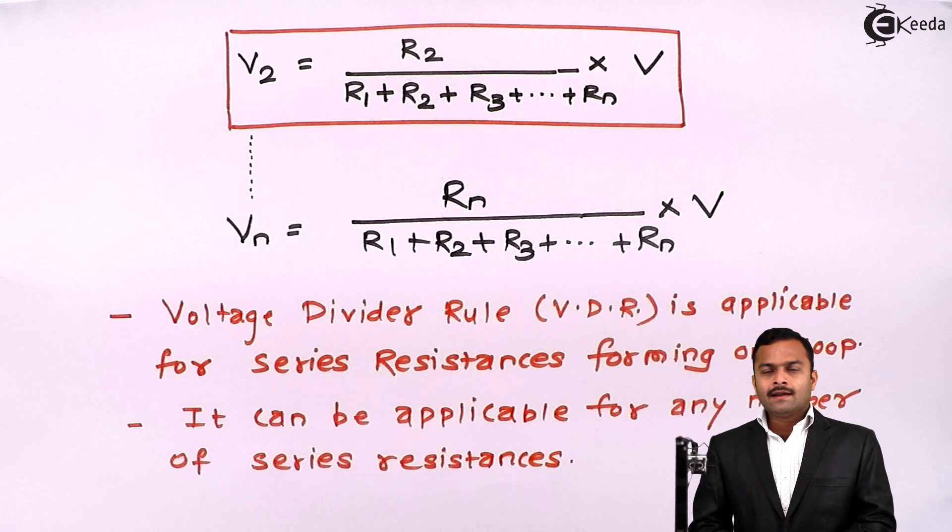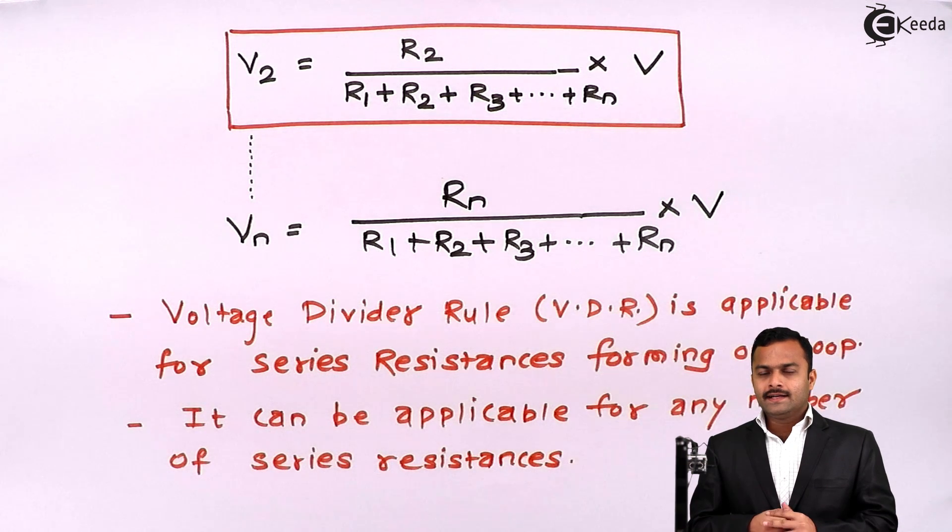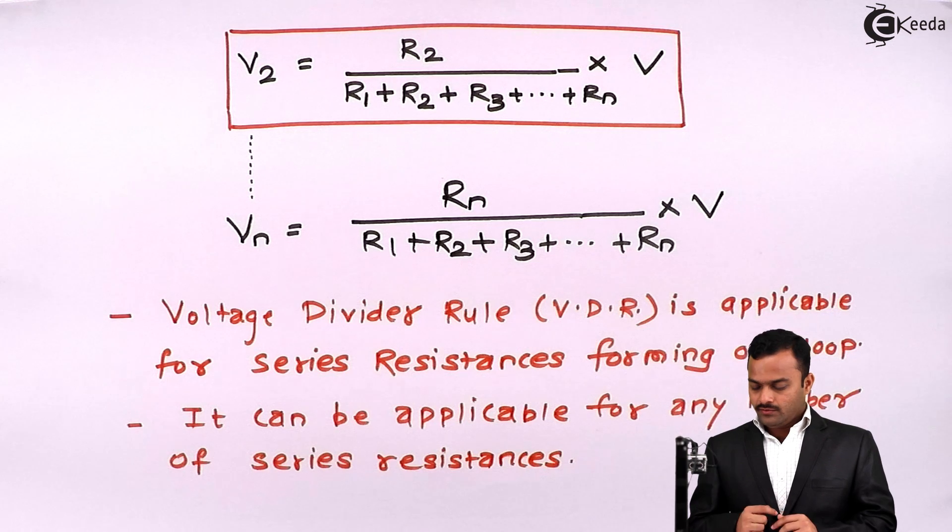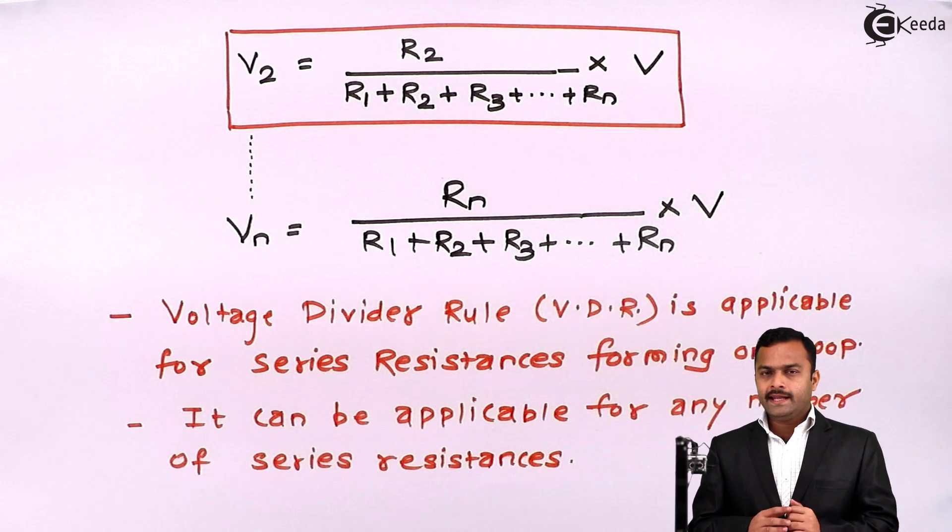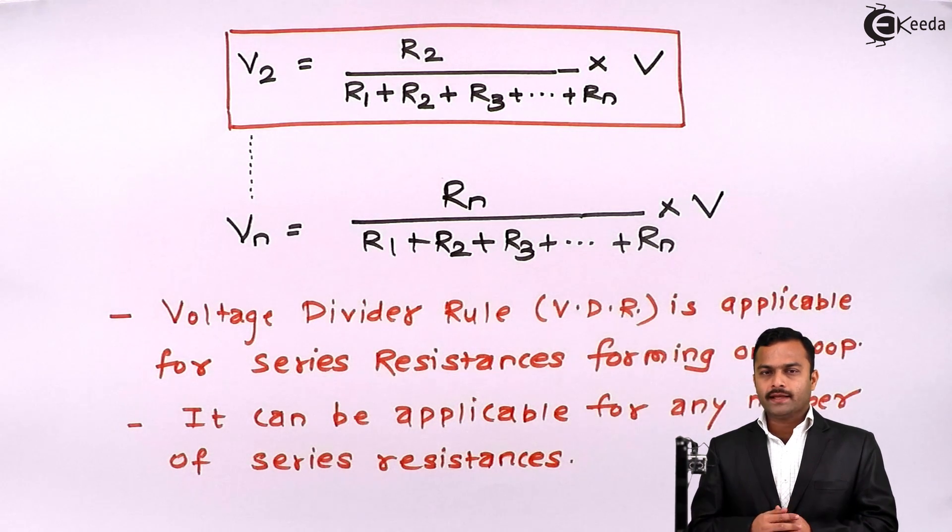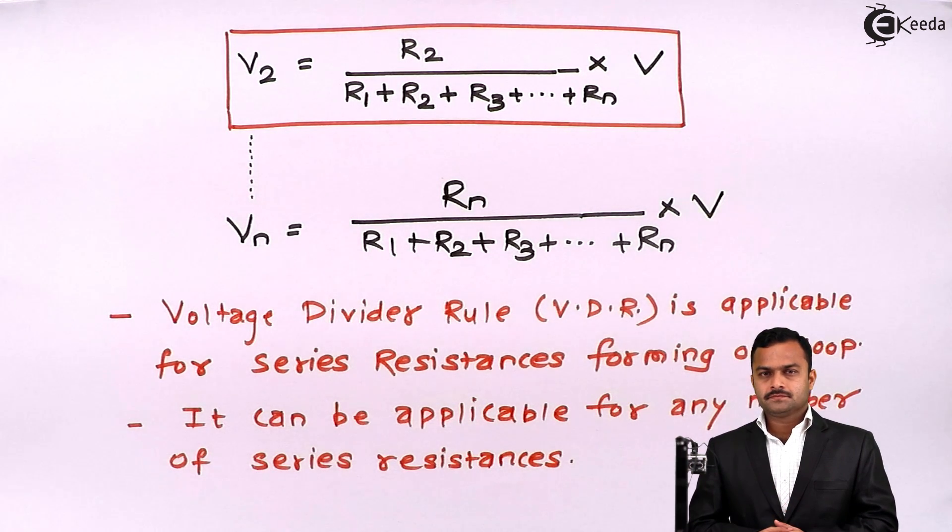Meaning, unlike current divider rule where it is applicable only for two resistances in parallel, VDR can be applicable for any number of resistances connected in series forming one loop.